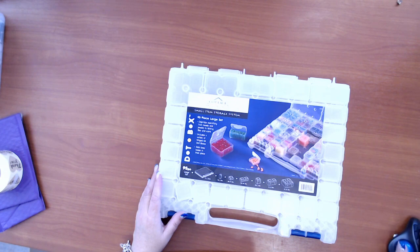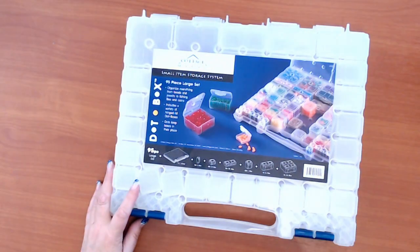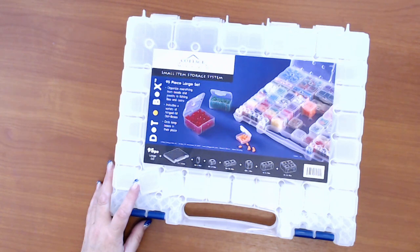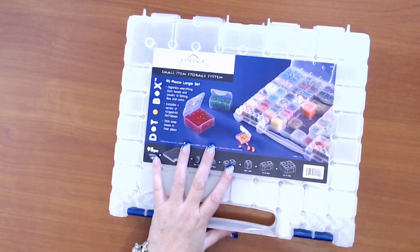This is the cottage mills storage system that I found on Amazon and I thought I would give it a go. This is cottage mills dot box large set. I've seen it in a range of prices and I finally came across this one which is a little bit cheaper in comparison to the cheapest that I could find.